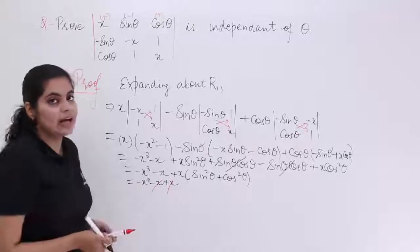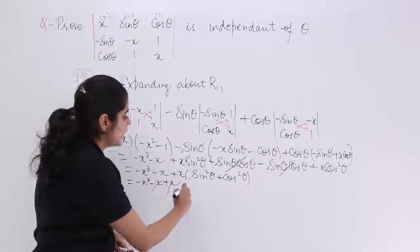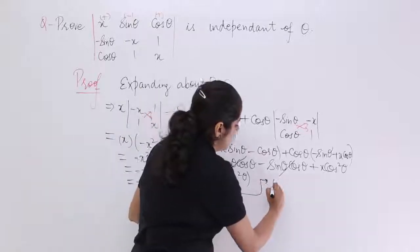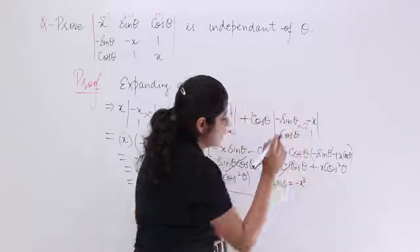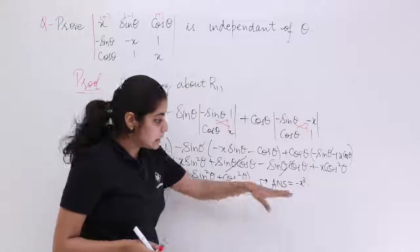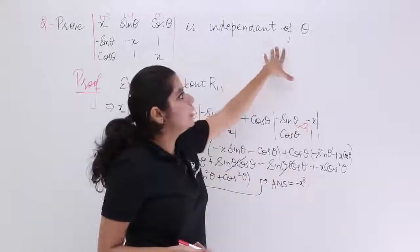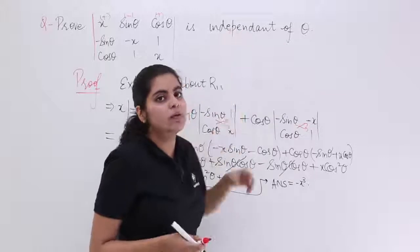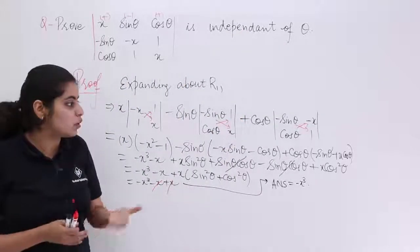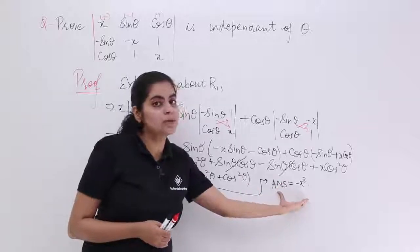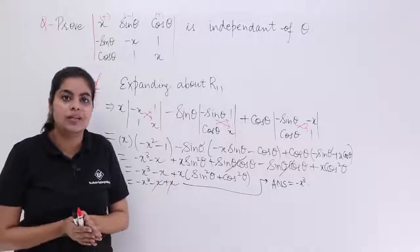Minus x and plus x cancel each other. The answer we are left with is minus x cubed. Now does minus x cubed have theta in it? There is no theta, and that is what we needed to prove — that the answer is independent of theta. We have an algebraic expression with no theta in it.